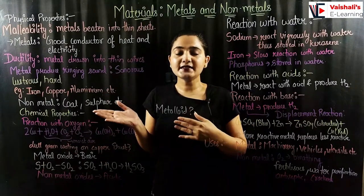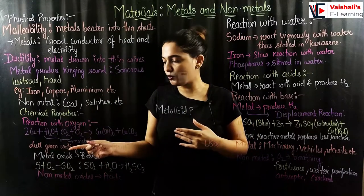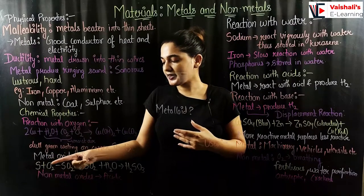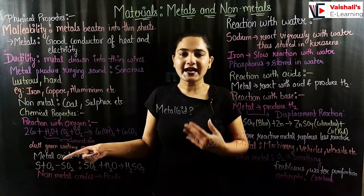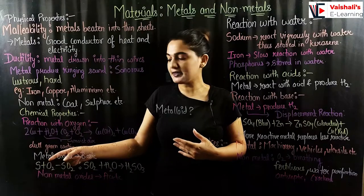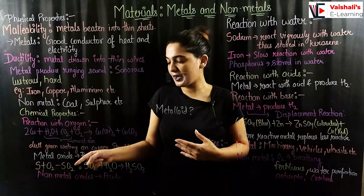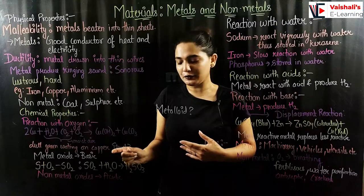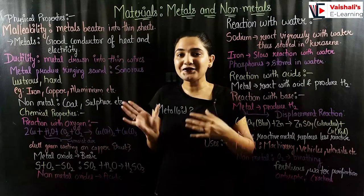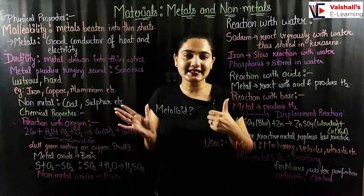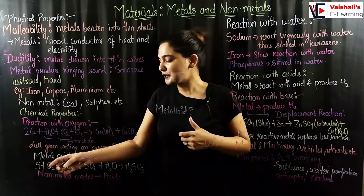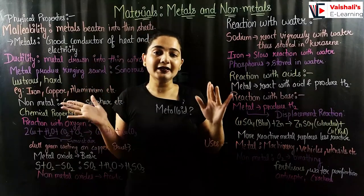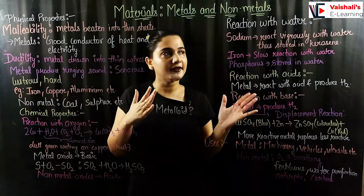The metal oxides that are formed are basic in nature — they turn litmus paper blue. On the other hand, non-metals like sulfur react with oxygen to form sulfur dioxide, which reacts with water to form sulfuric acid. This sulfuric acid is acidic in nature, so non-metal oxides are acidic and will turn litmus paper red.